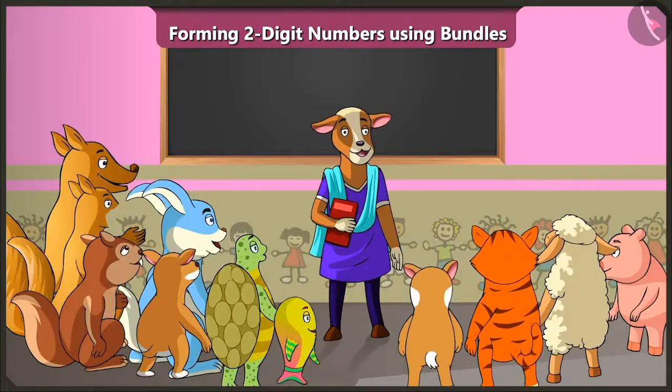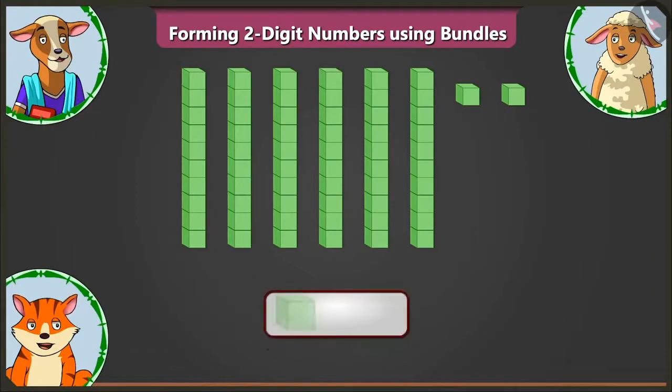Now, let us look at the second example. Look, Billy. Here, we have to count one small block as one.